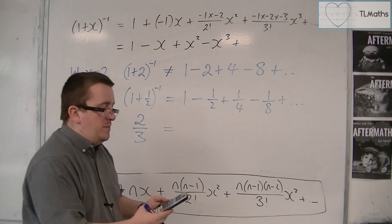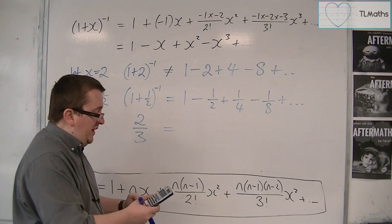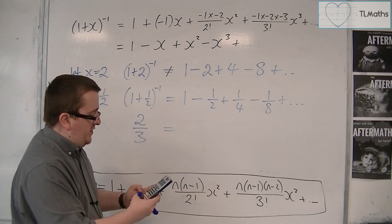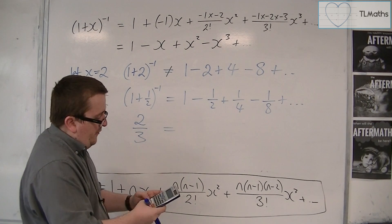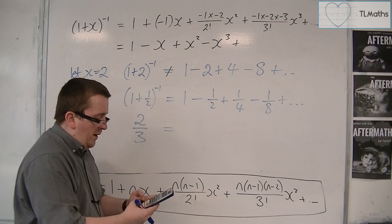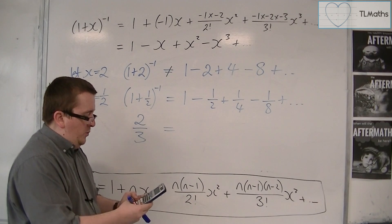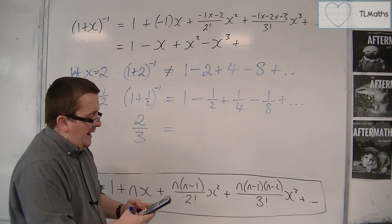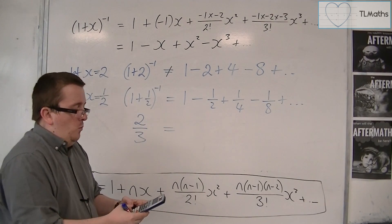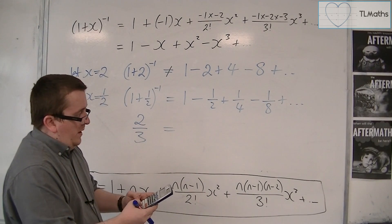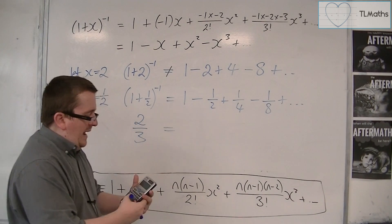Then take away 1 eighth, that gets me to 5 eighths. Then you're going to want to add on 1 eighths, then take away 1 over 32, then add on 1 over 64, then take away 1 over 128, then add on 1 over 256, and then take away 1 over 512, and then add on 1 over 1024.